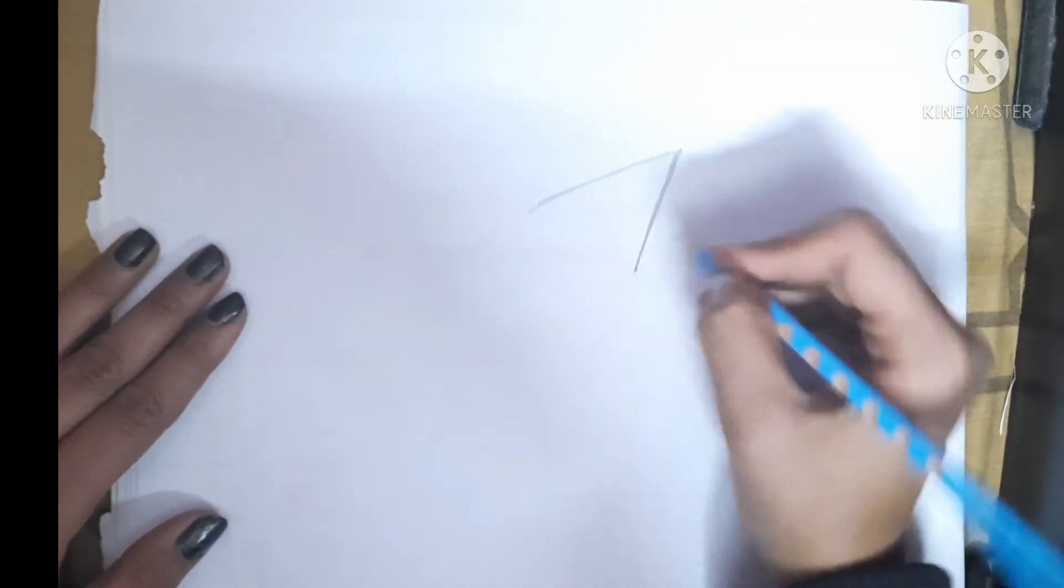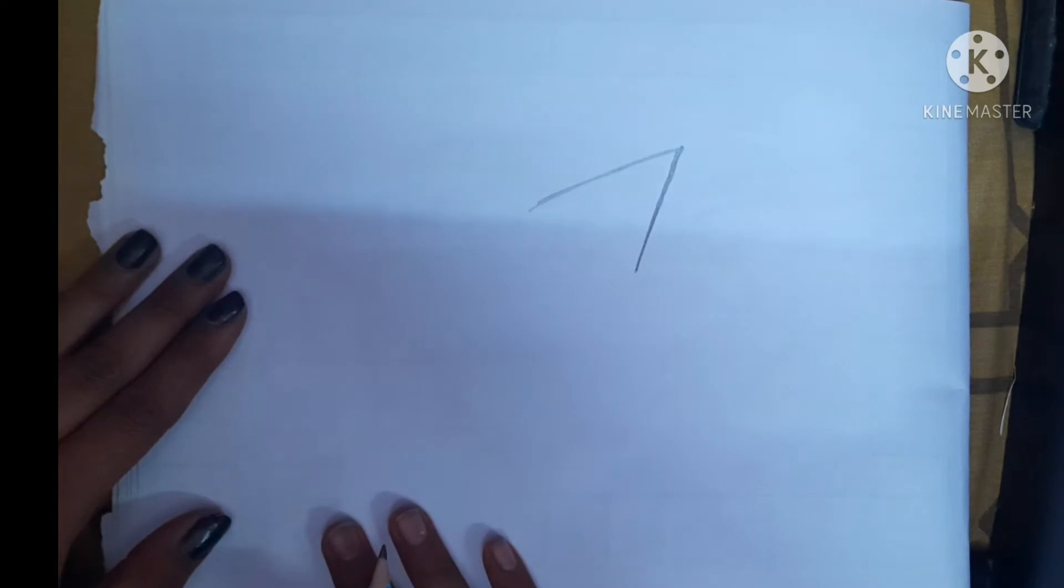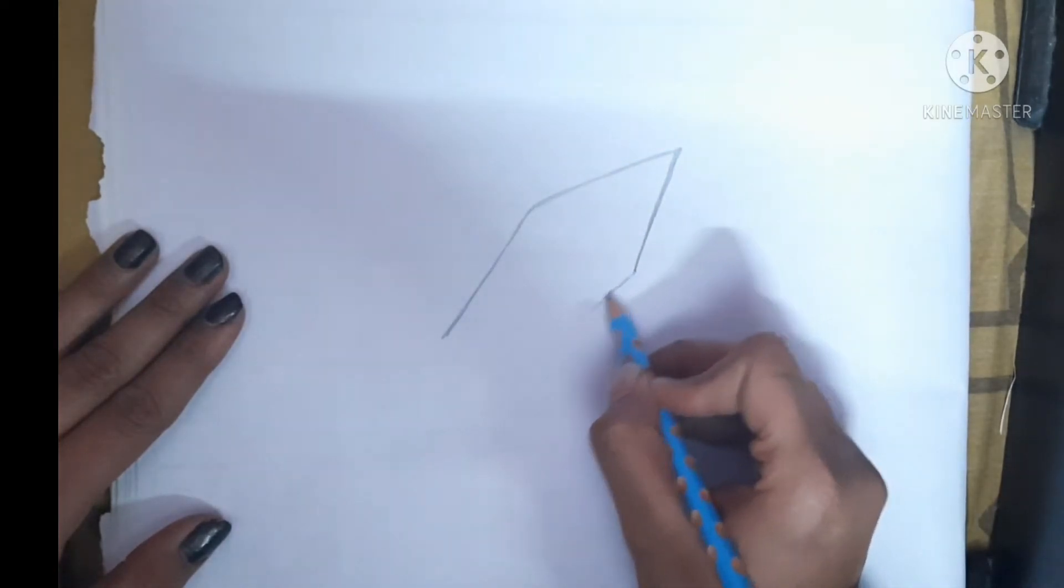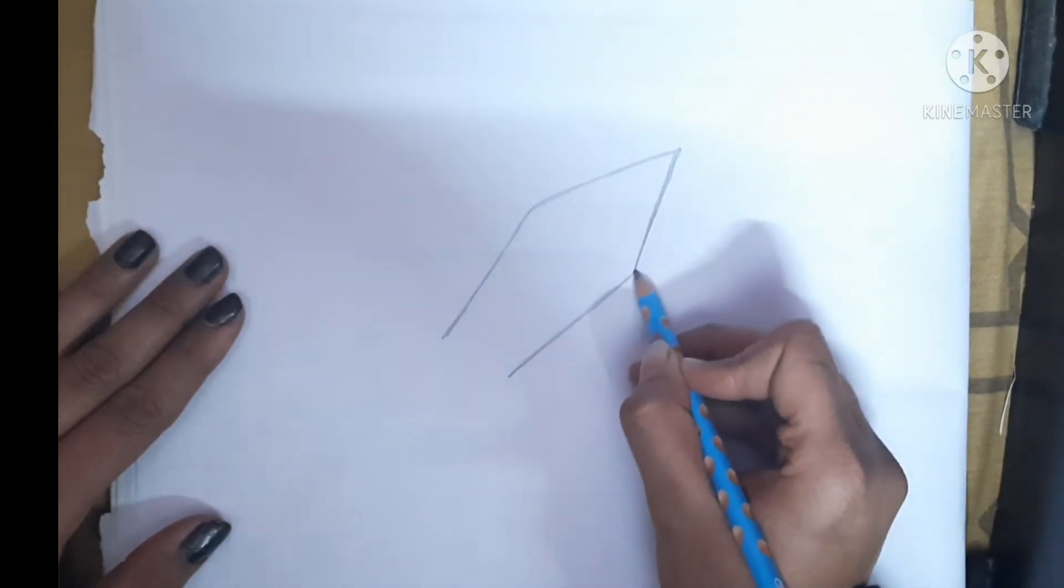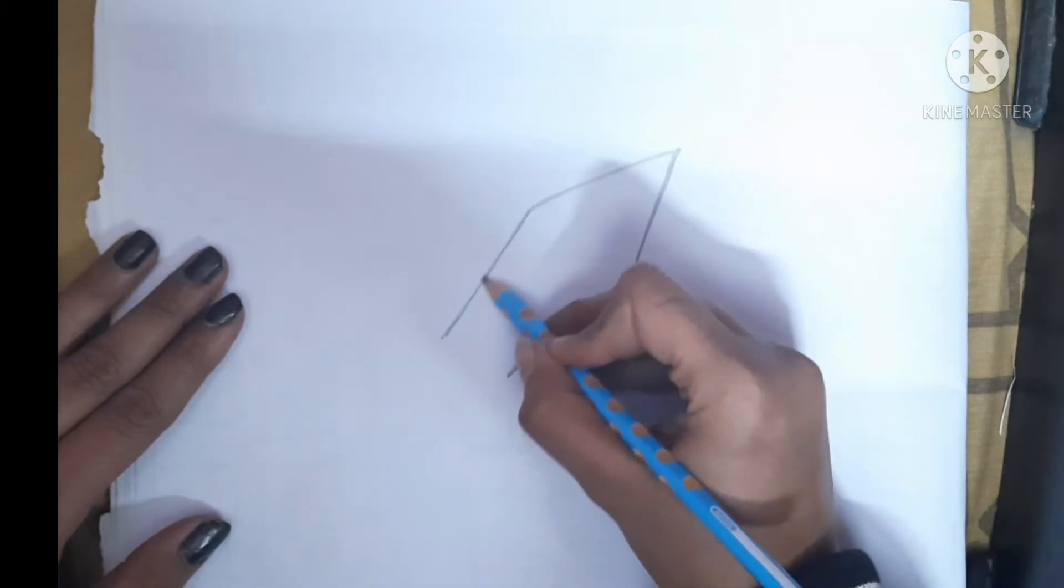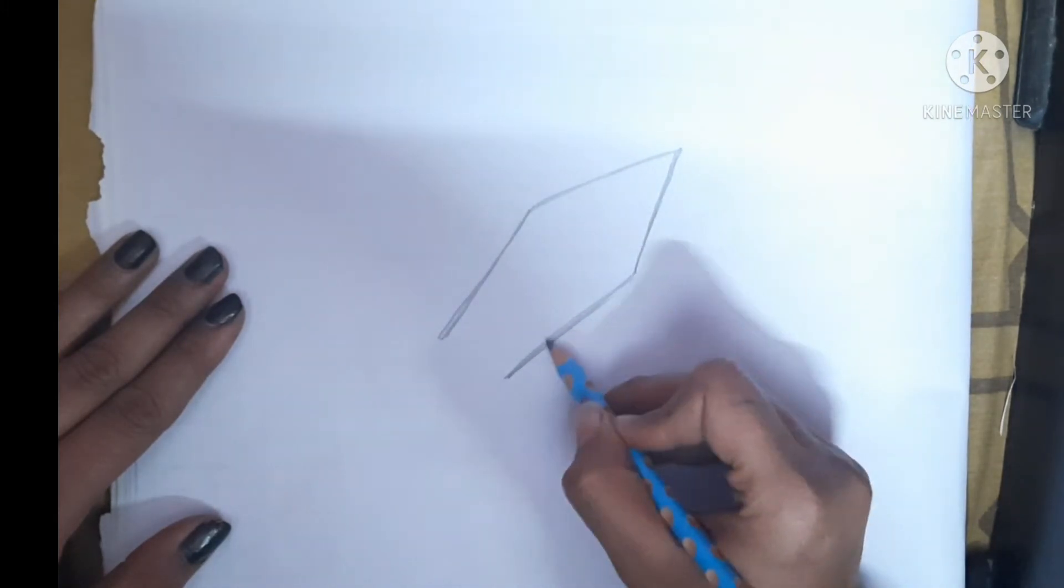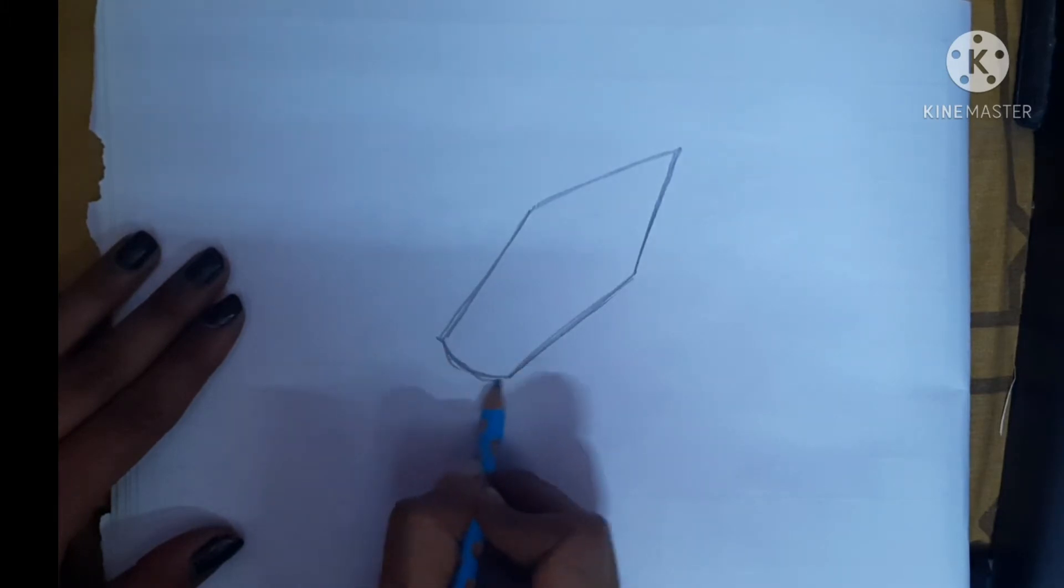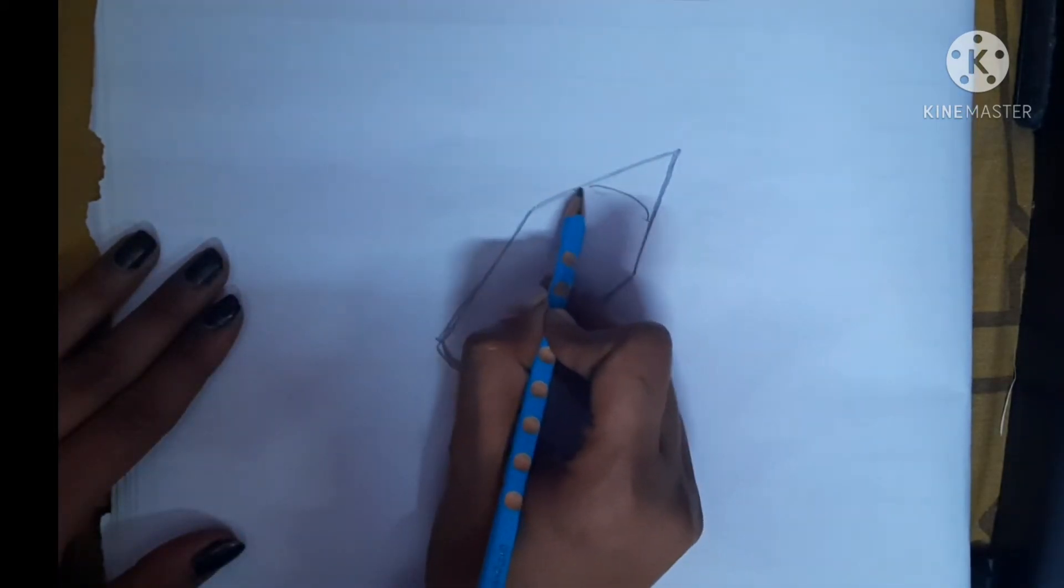Then two slanting lines going inwards like this of the same size, okay. And then a little curve here, okay. Make two curves here.